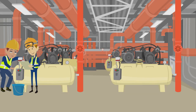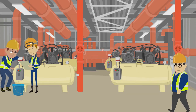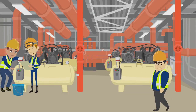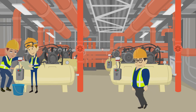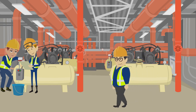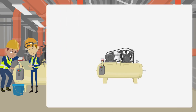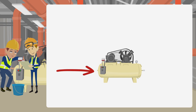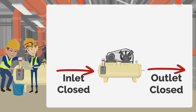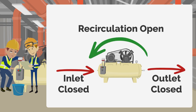Settle-out occurs at compressors and pumps when inlet and outlet pressures reach equilibrium. An overpressure is credible if the following are true: first, there is a credible scenario where the inlet and outlet of the compressor could be closed with a recirculation line open.